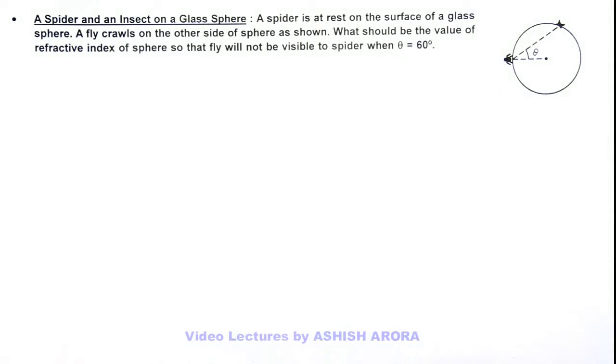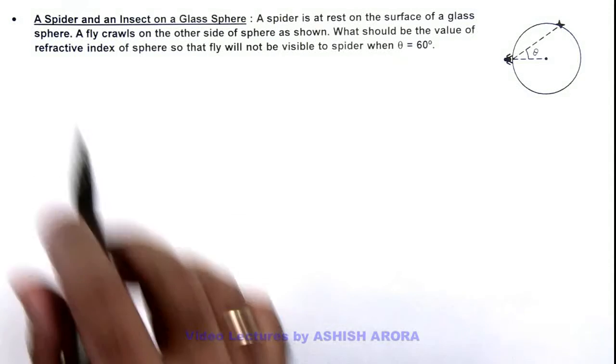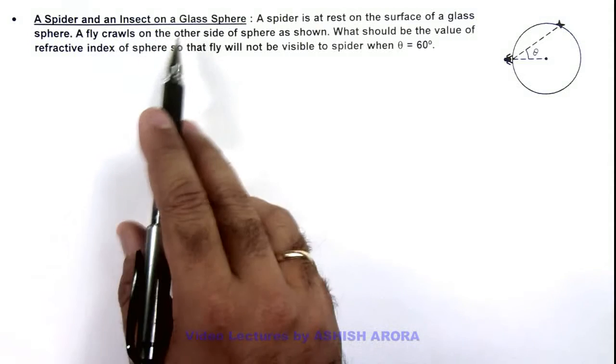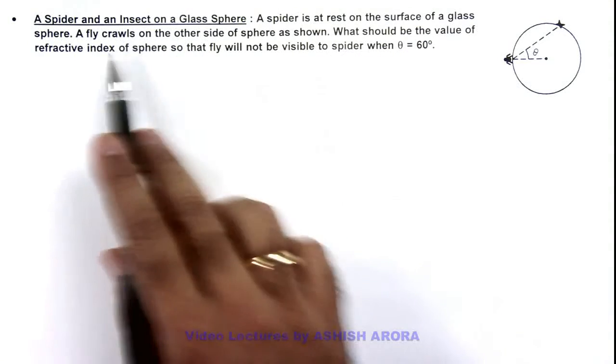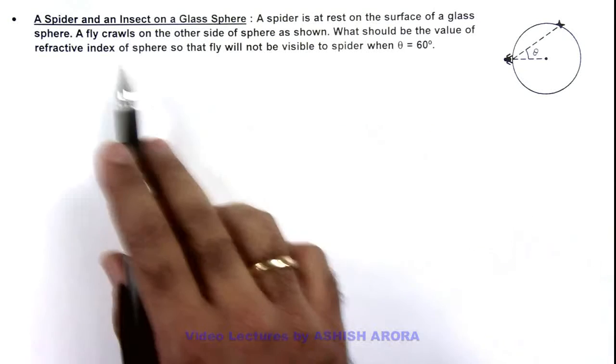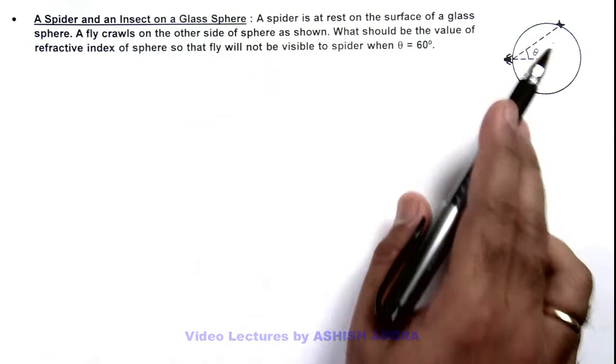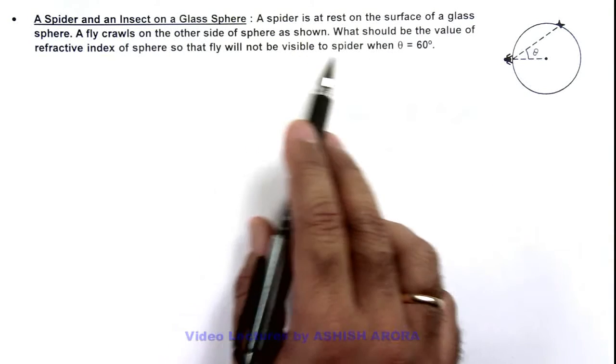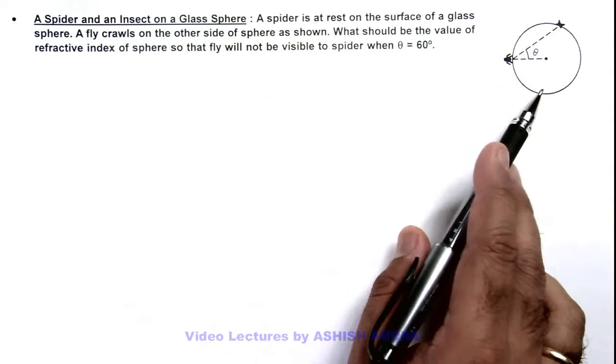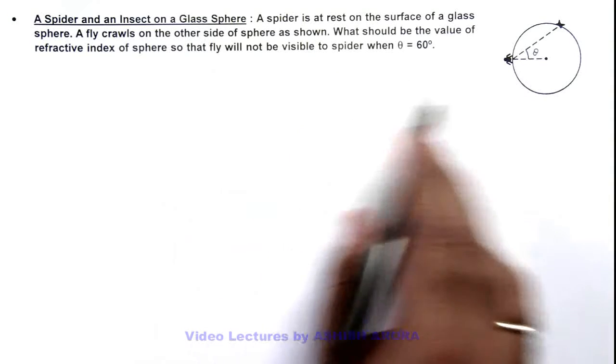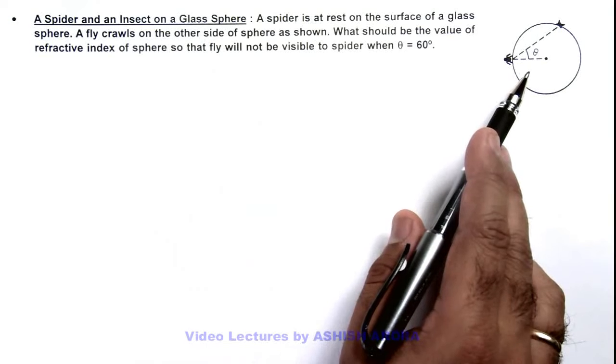In this illustration, we'll discuss a spider and an insect on a glass sphere. Here we can see a spider is at rest on the surface of a glass sphere, and a fly crawls on the other side of the sphere as shown. What should be the value of refractive index of this sphere so that the fly will not be visible to the spider when theta is 60 degrees?